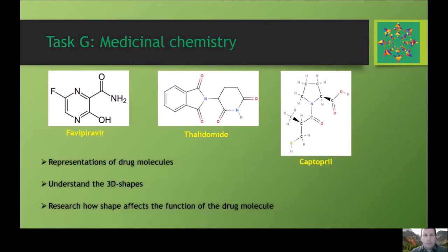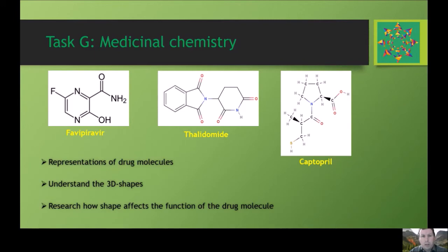If you're interested in medicinal chemistry or have a career in mind involving medicine, Task G might be the most interesting choice. It looks at some drug molecules — there are three on screen, and thalidomide in the middle is a particularly well-known one. Having done the introduction, you'll understand the skeletal formulae representations, and you can look at their 3D shapes. Since the 3D shape affects the function of the drug molecule, this task involves researching the effect of shape on the function of these drugs.